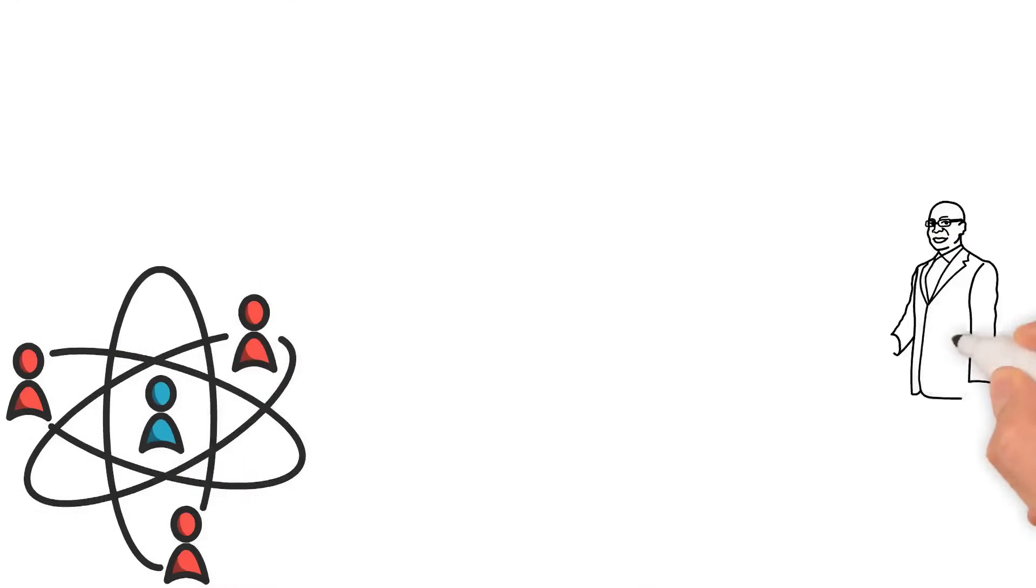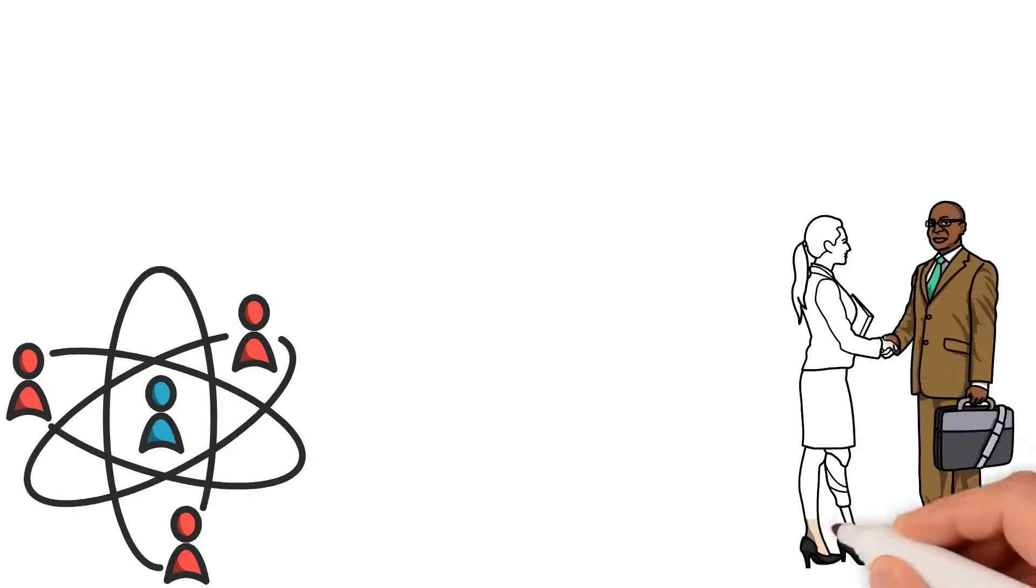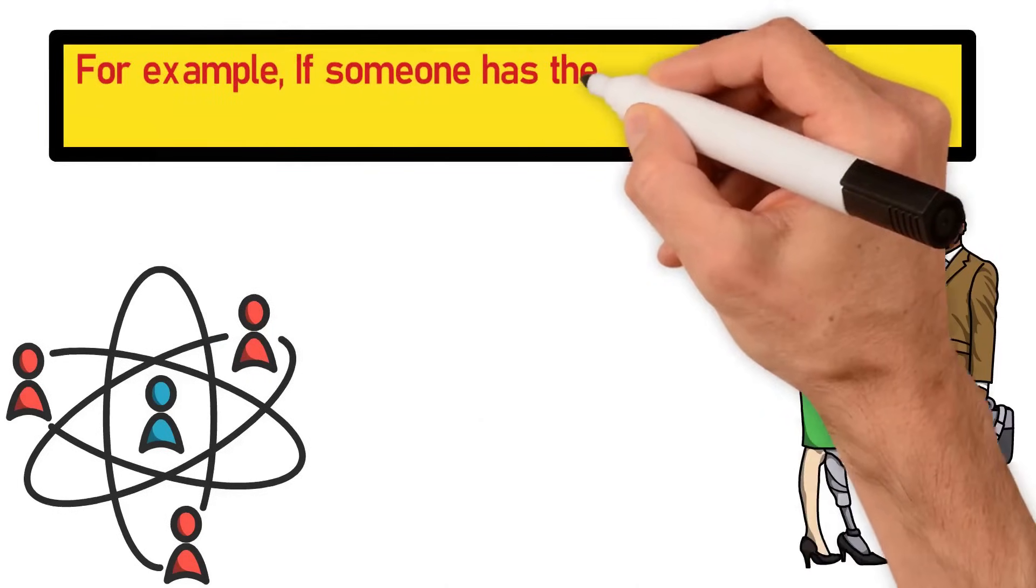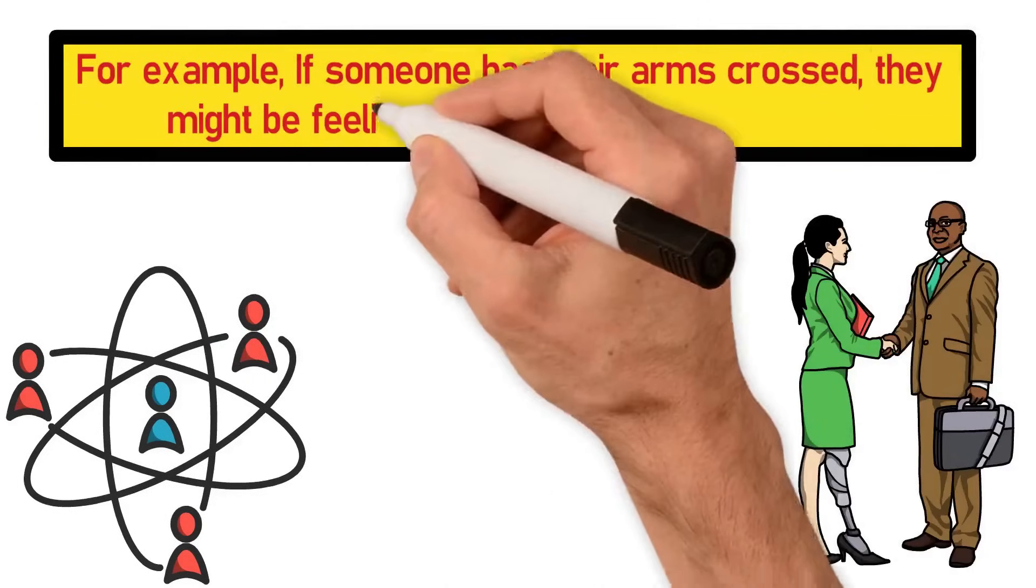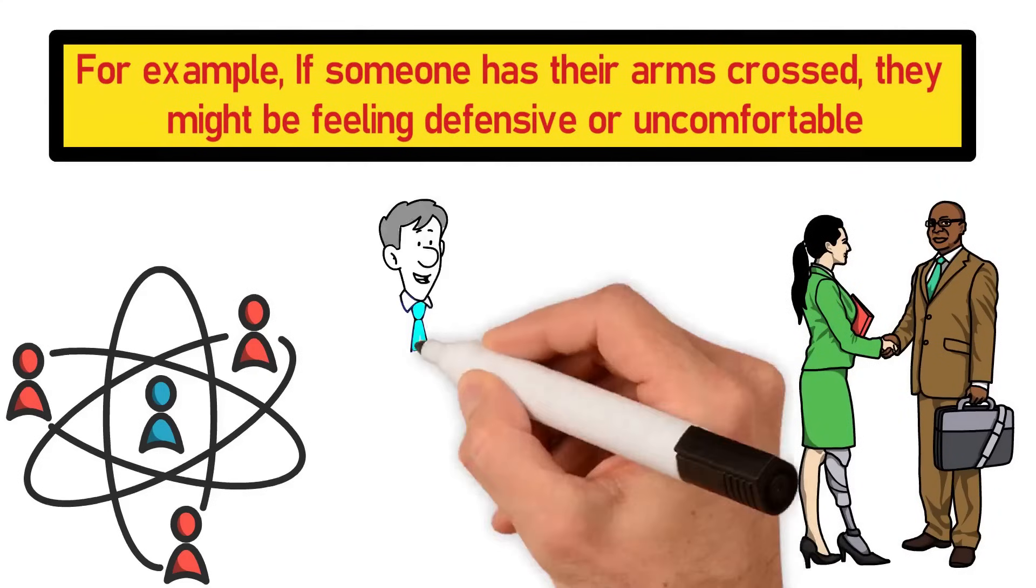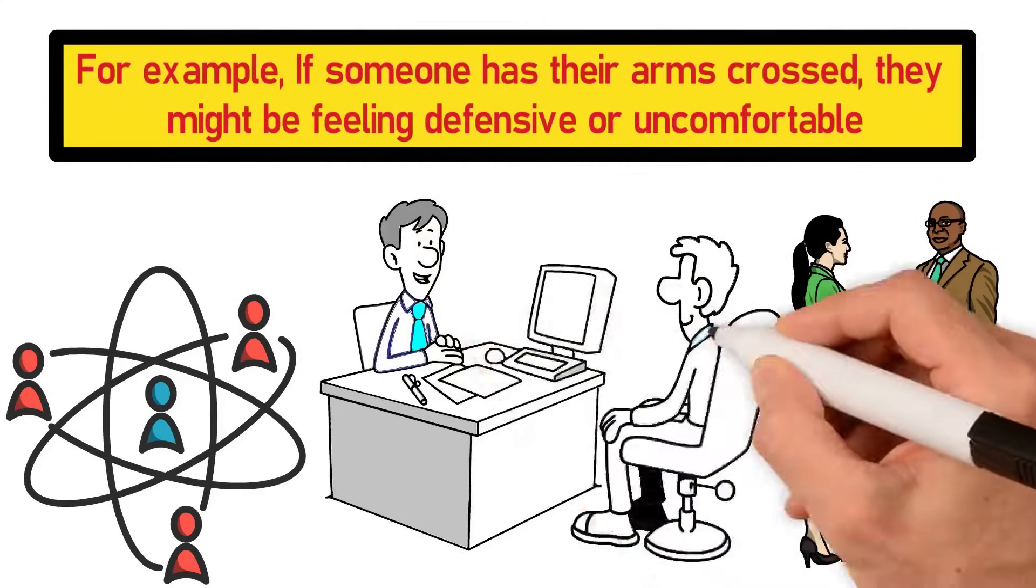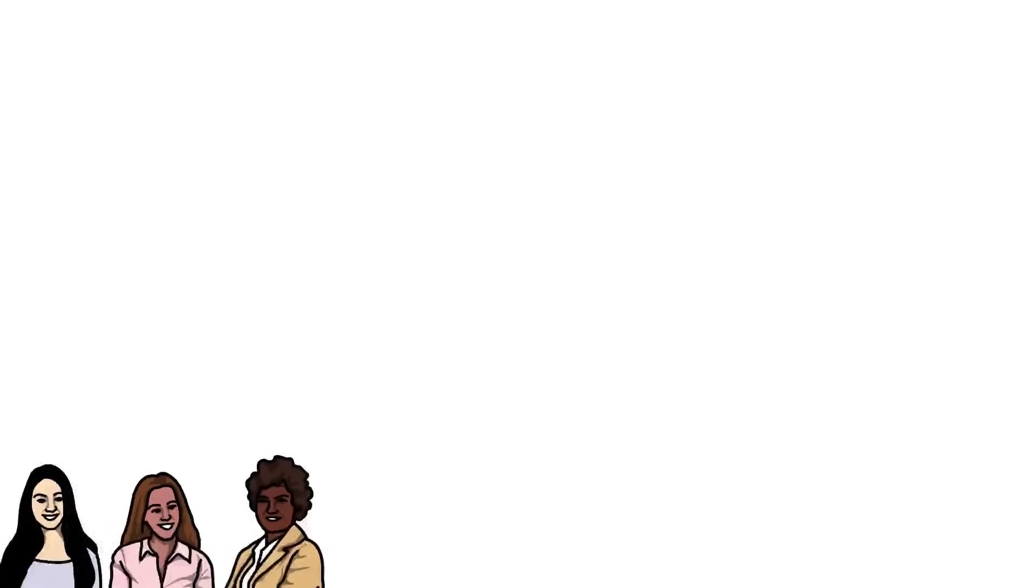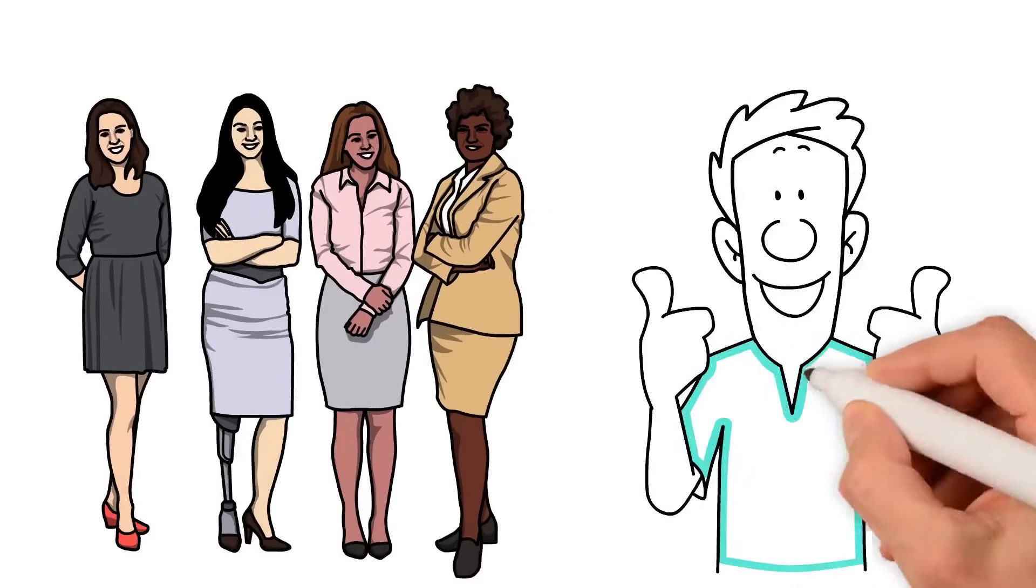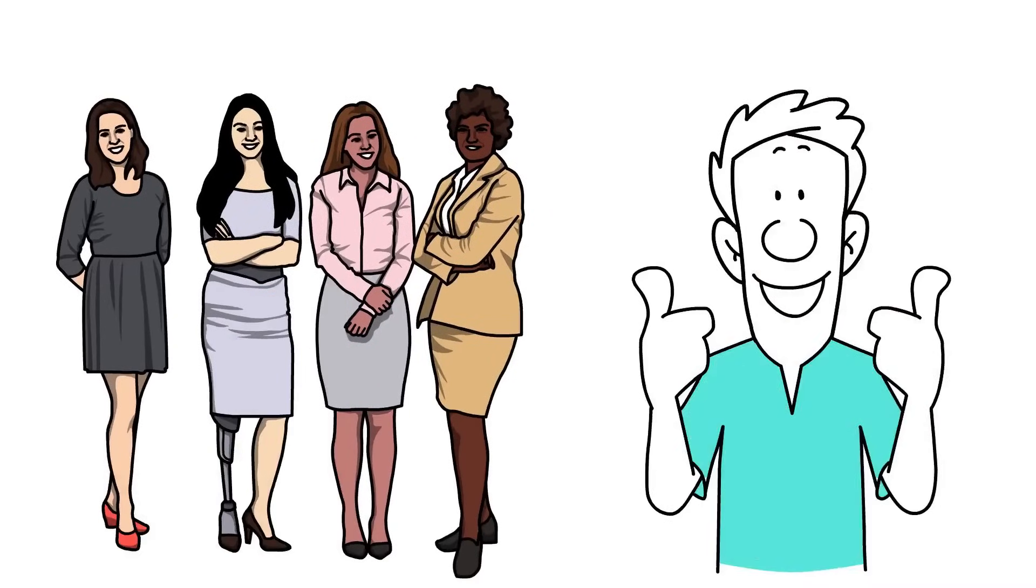It's also important to understand what different body postures and facial expressions mean. For example, if someone has their arms crossed, they might be feeling defensive or uncomfortable. On the other hand, if they're standing or sitting in a more open way, it shows they're interested and open to conversation. Facial expressions matter too. A real smile is one where not just the mouth smiles, but the eyes do too.